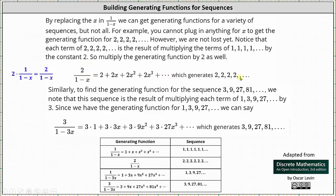Similarly, we can find the generating function for the sequence 3, 9, 27, 81, and so on. This sequence is simply the sequence 1, 3, 9, 27, and so on multiplied by 3. Since we know the generating function for 1, 3, 9, 27, and so on is 1 divided by 1 minus 3x, if we multiply that generating function by 3 — which is the same as multiplying the generating series by 3 — we get the generating function for the sequence 3, 9, 27, 81, and so on.